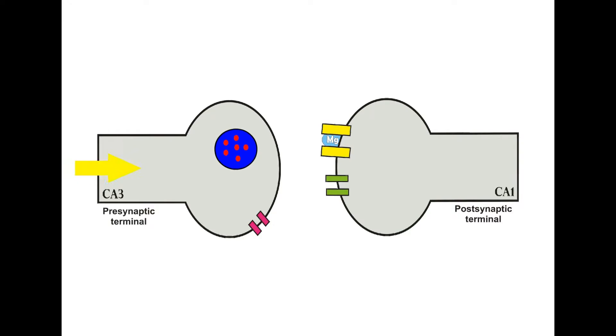When high frequency stimuli arrive at CA3 presynaptic terminal, it opens voltage-gated calcium channels. Calcium ions enter inside presynaptic terminal, triggering glutamate filled vesicles to fuse with the presynaptic membrane. Glutamate is released at the synapse and binds with AMPA receptor and NMDA receptor; glycine also binds with NMDA receptor.